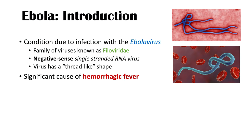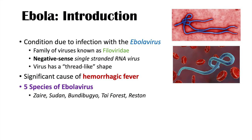The important point with regards to Ebola virus is that it is a significant cause of hemorrhagic fever. There are actually five species of Ebola virus: Zaire, Sudan, Bundibugyo, Taï Forest, and Reston.